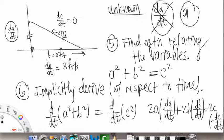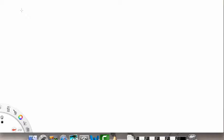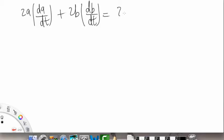So I'll rewrite this on the next slide. So we have 2A times dA/dt plus 2B times dB/dt, and finally our 2C times dC/dt. So here we obtain this equation from implicitly deriving with respect to time.